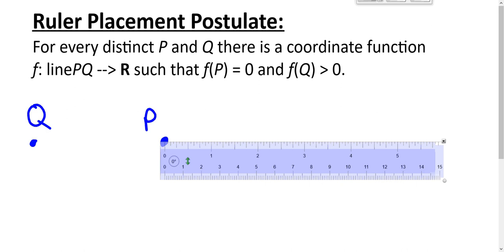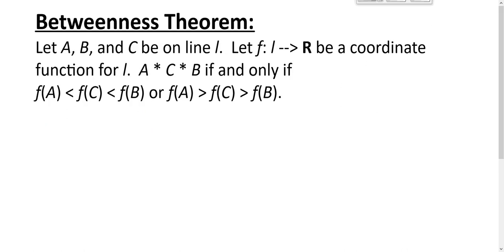One thing about the ruler placement postulate and the ruler postulate, it leads to the betweenness theorem. The betweenness theorem says let three points be on a line and we're going to let f be a function, a coordinate function from the set of points on line l to the set of real numbers.